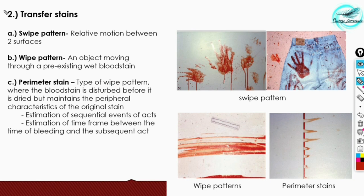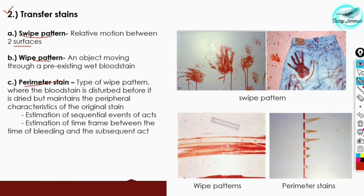Transfer stains are formed when blood is transferred from one surface to another surface. They are further divided into three types: the swipe pattern, the wipe pattern, and the perimeter stain. The swipe pattern involves relative motion between two surfaces that causes the transfer of stains. You can see a picture depicting a hand — the hand is the blood-bearing surface — and the surface on which the stain is deposited.